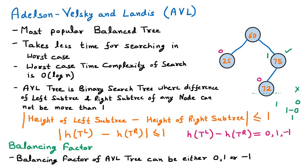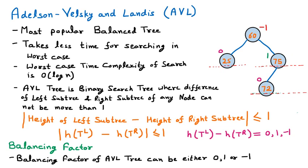We are considering different levels for height — not the number of nodes. Now finding the balancing factor of the remaining node, which is node 60. On the left-hand side of node 60, there is only one level. On the right-hand side, there are two levels. So the balancing factor is height of left minus height of right: 1 minus 2 equals -1. So the balancing factor of node 60 is -1. Now we have the tree with all balancing factors calculated.